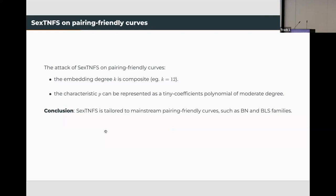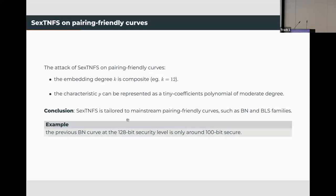Among these variants, SEX-TNFS is the most powerful attack algorithm for pairing-friendly curves. This attack works well on curves satisfying two conditions: the embedding degree K is composite, and the characteristic P can be represented as a polynomial with tiny coefficients of moderate degree. In conclusion, this attack is almost tailor-made to popular pairing-friendly curves such as the BN and BLS families. For example, the previous BN curve at the 128-bit security level is now only around 100-bit secure.